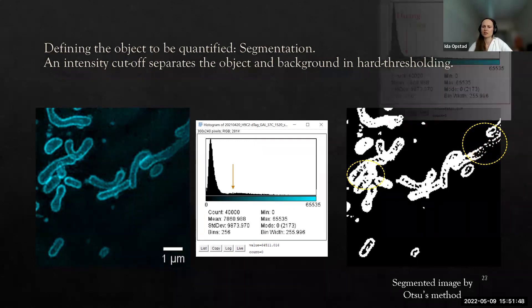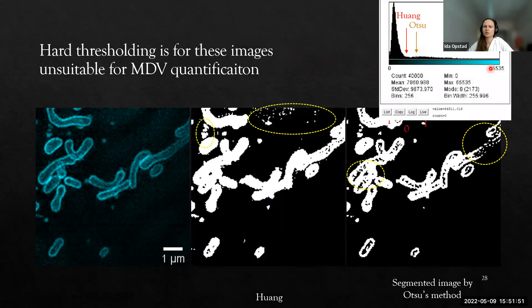We can change the threshold a bit using different semi-automatic methods called Otsu's or Huang. Here we change the threshold a bit down so we fill the mitochondria better, but we also get a lot of noise or artifacts in the background. It's not easy to see here, but it's just some reconstruction artifacts which show up as vesicle-like things.